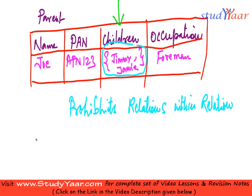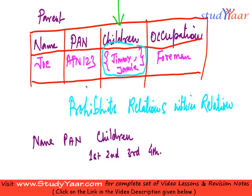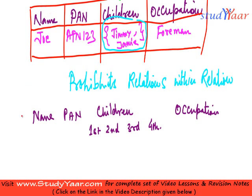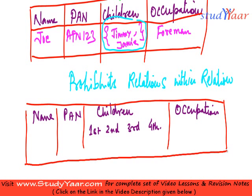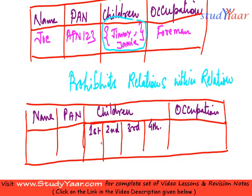We can think of it like this: I have name, PAN, and children — and within children I have first child, second child, third child, fourth child, and so on — and I have occupation. If I make a table out of it, within this relation I have another relation. Within the children attribute, I am storing a child relation.